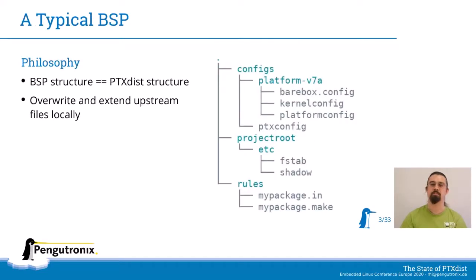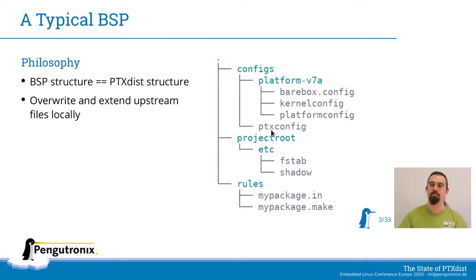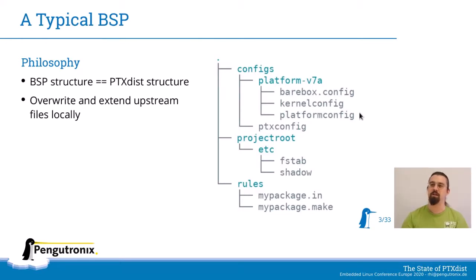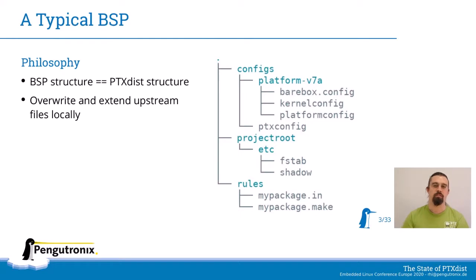Let's have a look at a typical BSP. First you have this folder structure, which is quite usual. You have some configs in your configs folder. For example, the PTX-Config contains all the software that you want to build in your image. Then we have a platform config that defines the hardware you're using and the kernel config, which is basically the config file for the kernel. In this case, we're also having a barebox configuration which configures the bootloader.